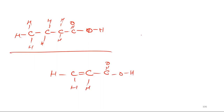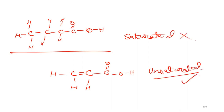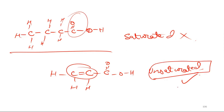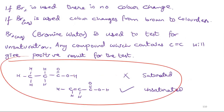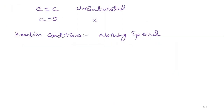This compound is saturated, and this one is unsaturated. Why is this unsaturated? Because it has a carbon-carbon double bond. However, unsaturation requires a carbon-to-carbon double bond — a carbon-to-oxygen double bond does not count. Carbon-carbon double bond is unsaturated; carbon-oxygen double bond is not unsaturated — it is saturated. The reaction conditions in halogenation are nothing special.